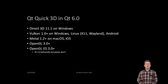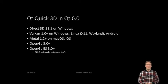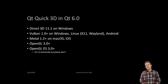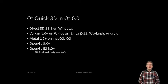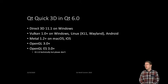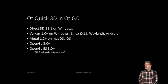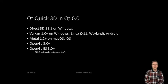What about Qt Quick 3D? The story is mostly the same, except for OpenGL we need to raise the bar a bit. We do support OpenGL ES 2.0, but 3.0 or higher is strongly recommended. Certain 3D features — shadow mapping, image-based lighting, skybox and so on — will use features not necessarily available in ES 2.0 and GLSL ES 1.0. ES 2.0 does work but with limited functionality, so the recommendation is OpenGL ES 3.0 or, on the desktop, OpenGL 3.0 or newer.